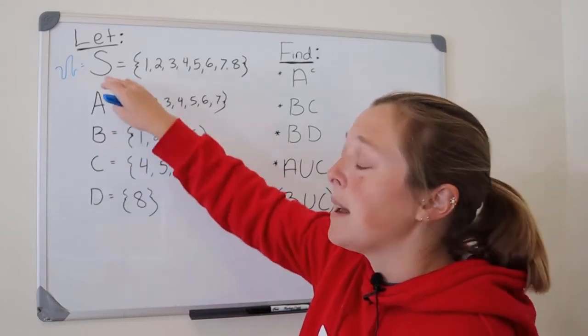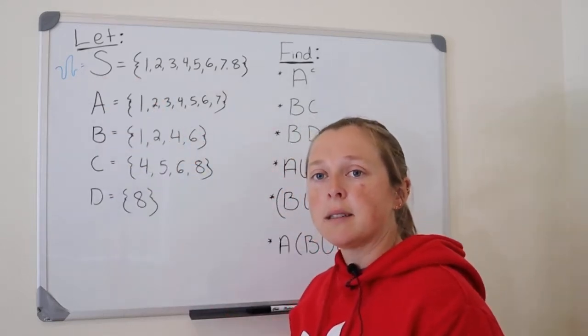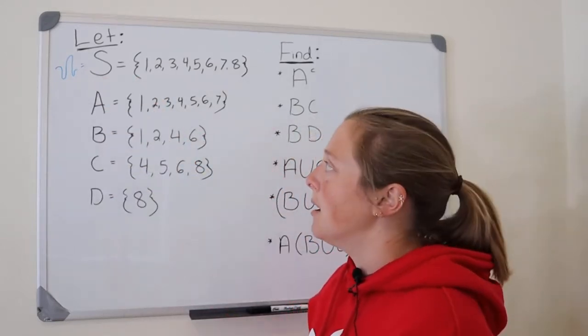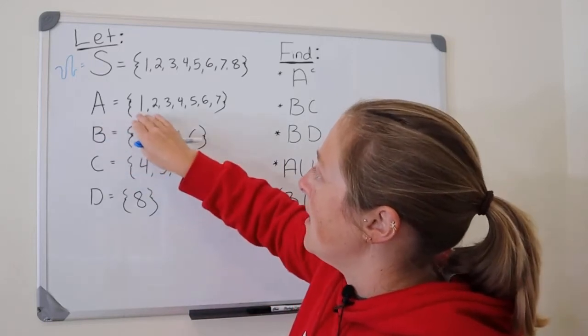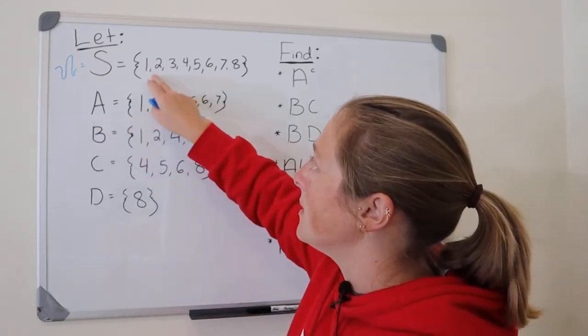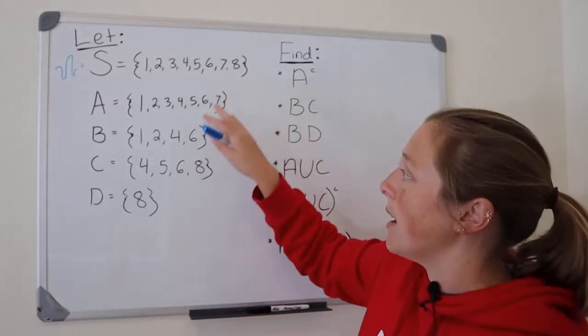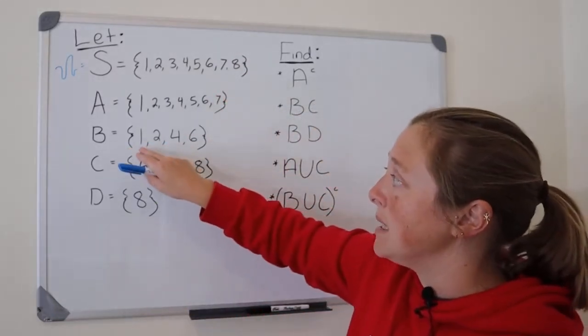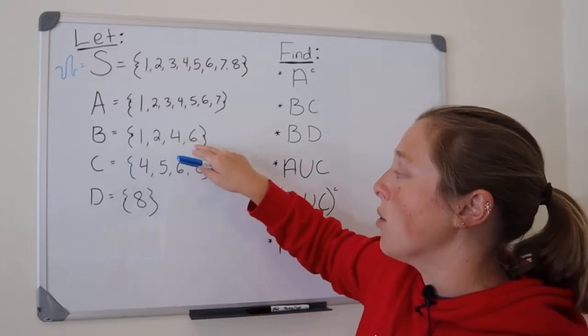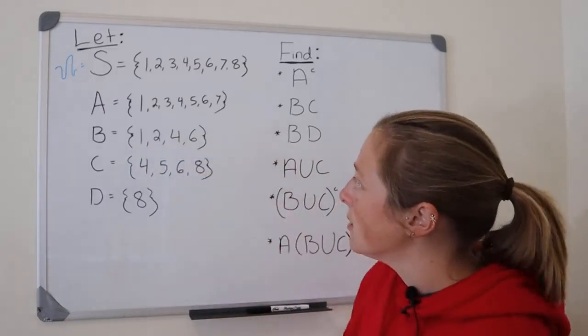Events are subsets of the sample space. So event A is made up of the elements one through seven, so everything except for eight. Event B is made up of the elements one, two, four, and six, et cetera.